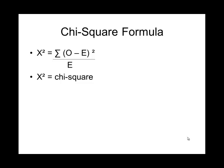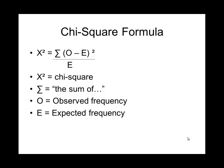In order to calculate the chi-square, what you're going to be doing is you're going to be taking the sum of the observed frequencies and subtracting the expected frequencies, squaring that value and dividing by the expected frequency.